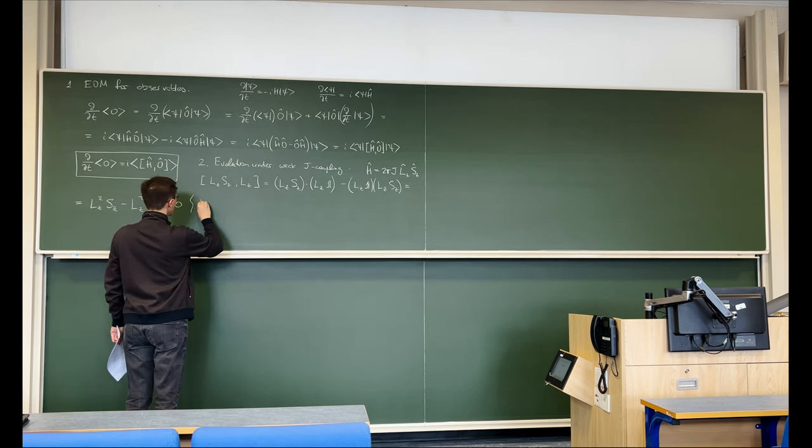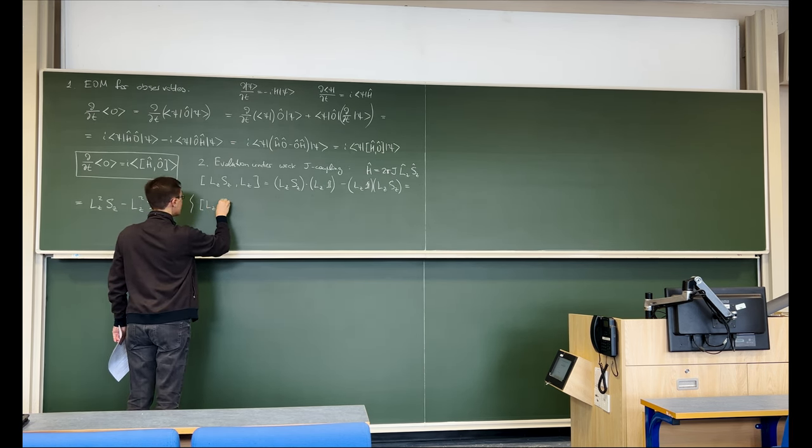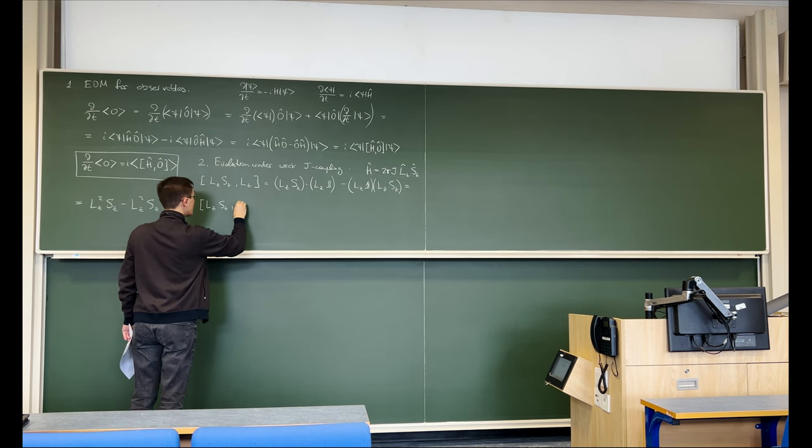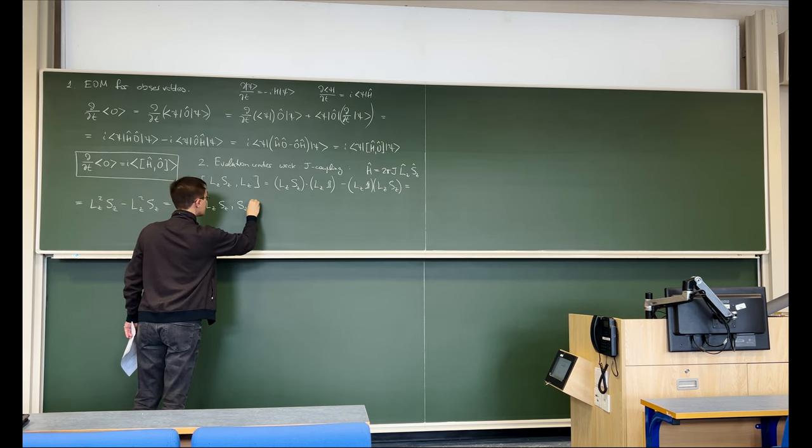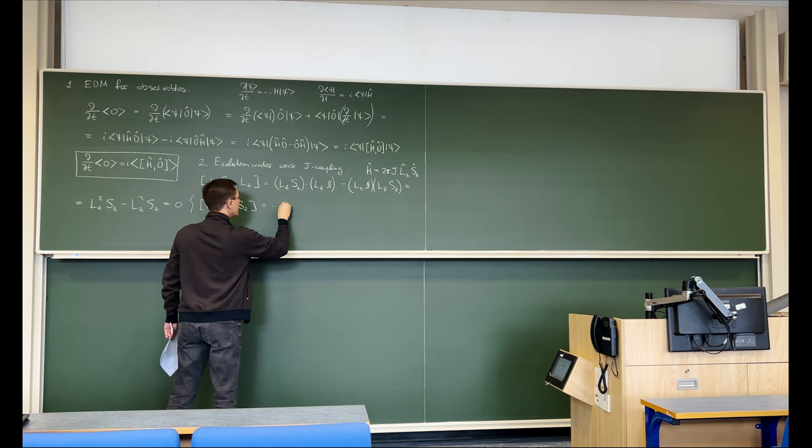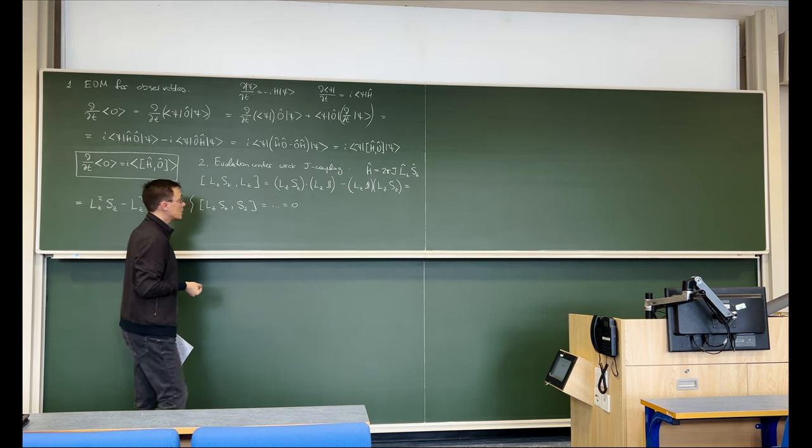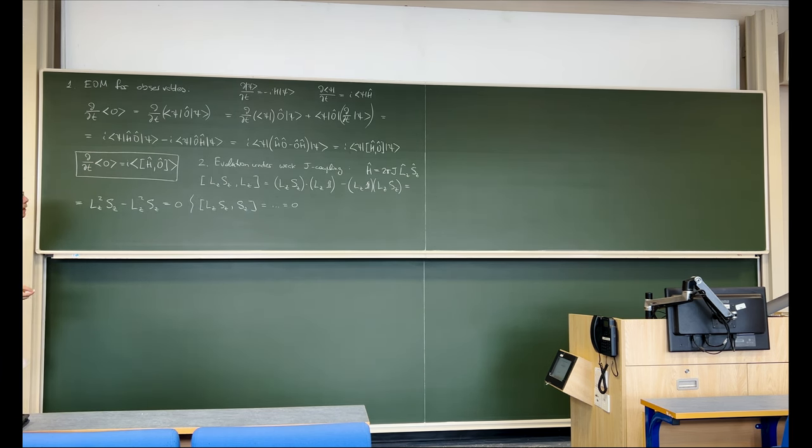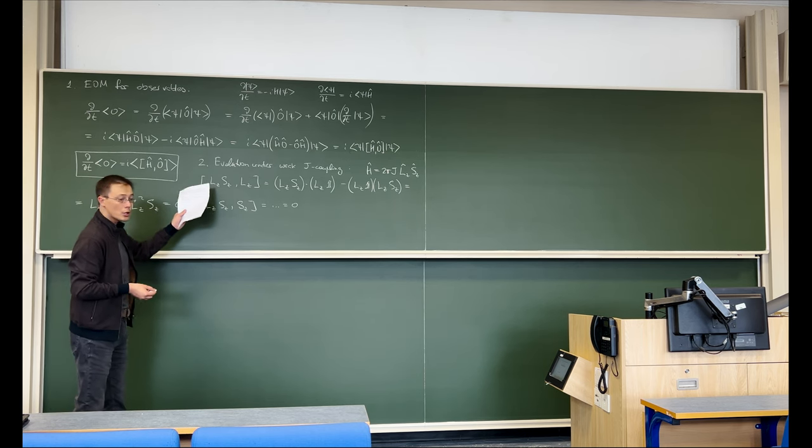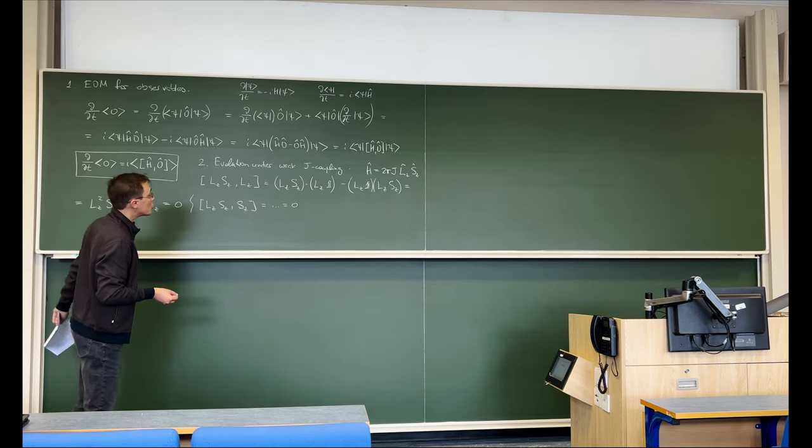Therefore the derivative is zero, therefore longitudinal magnetization does not evolve under J coupling. And likewise, we can say LzSz commutator with the longitudinal magnetization of the other spin in exactly the same way is zero. So far so boring. We do not have evolution of longitudinal magnetization under J coupling, at least when the J coupling is weak.